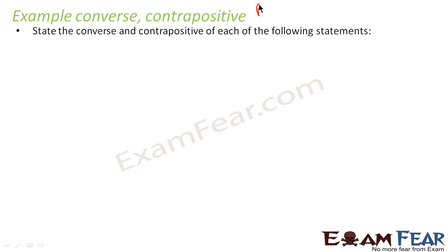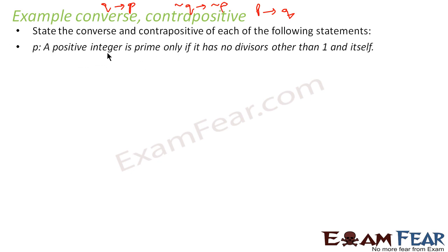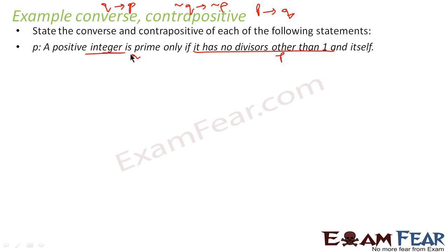We will take an example of converse. If the statement is of the form P implies Q, the converse will be Q implies P, and the contrapositive will be not Q implies not P. For example: a positive integer is prime only if it has no divisors other than 1 and itself. Here P is the integer being prime and Q is having no divisors other than 1 and itself. The converse is: if the positive number is prime, then the number has divisors other than 1 and itself.